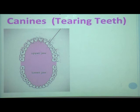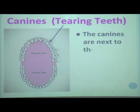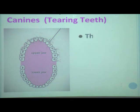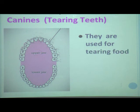Next we will see canines. The canines are next to the incisors. They are sharp and pointed and are used for tearing food like meat. That is why they are called tearing teeth.